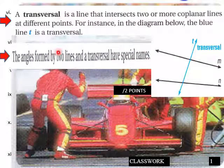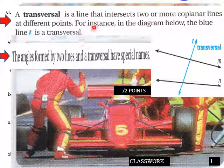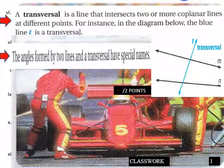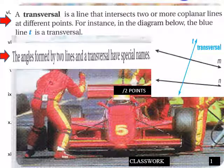A transversal is a line. Students, this is classwork sheet page 1. A transversal is a line that intersects two or more coplanar lines at different points. For instance, in the diagram below, the blue line T is a transversal — you have these two lines, and here is the transversal.